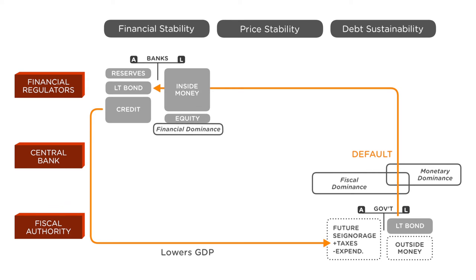Under financial dominance, banks don't raise new equity but rather cut their credit supply. With less credit going to the real economy, a diabolic spiral between financial sector risk and government bond default risk emerges. Both banks and the government become more risky and feed on each other, leading to higher risk premia.